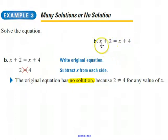Pick any number you want. Let's say 18. 18 plus two is not going to be the same thing as 18 plus four. Zero plus two is not the same as zero plus four. I don't care what number you pick for x. It will not be true.